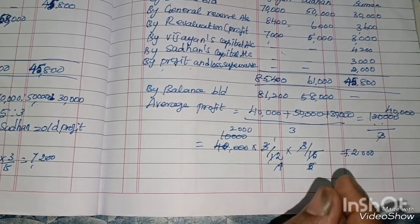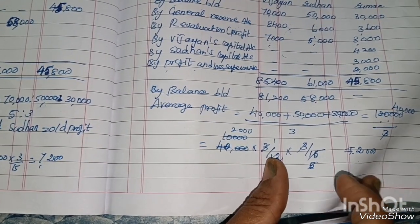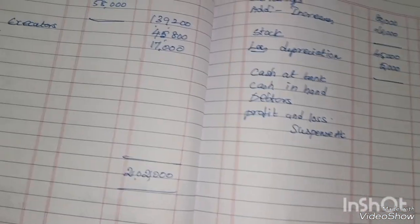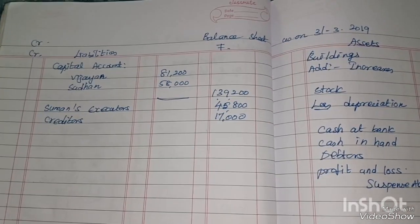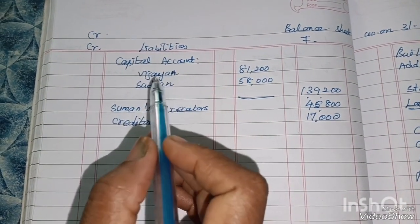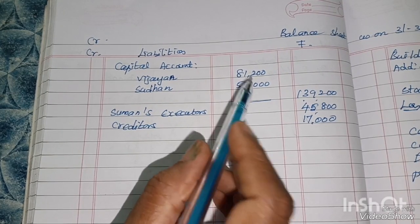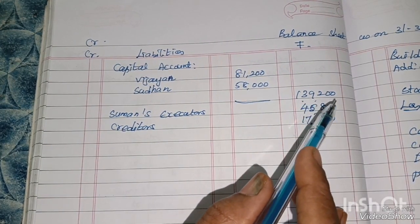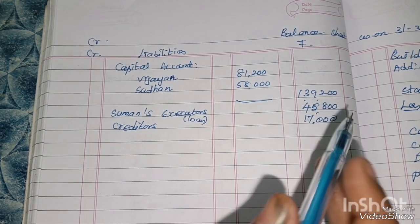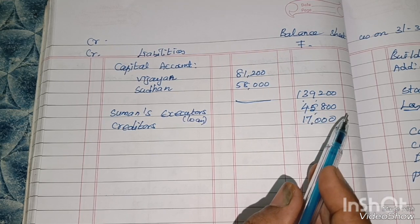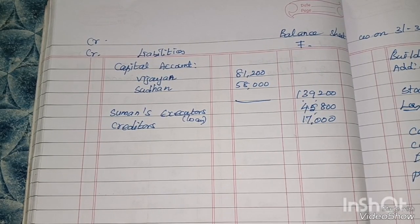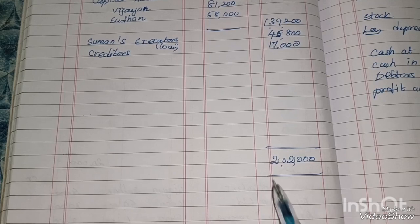Next, the balance sheet as on 31-3-2019. On the liabilities side: capital accounts — Vijayan 81,200 and Sudhan 58,000, totalling 1,39,200. Suman's Executor's loan account is 45,800. Creditors are 17,000. Total liabilities are 2,22,000.